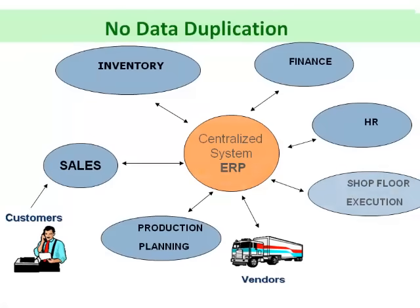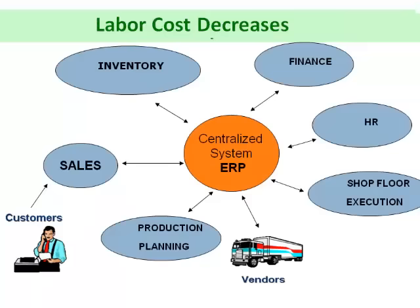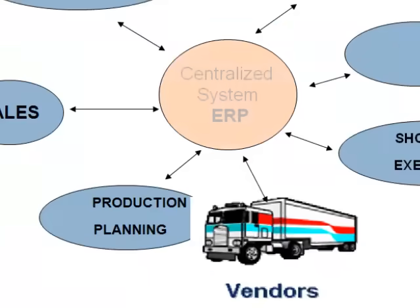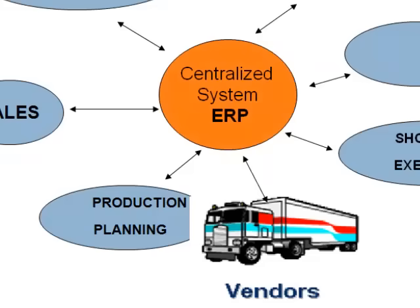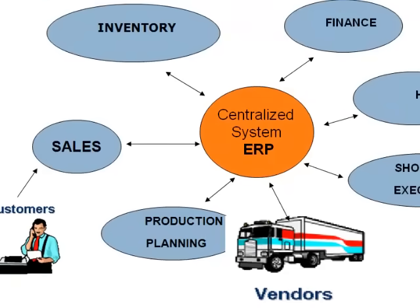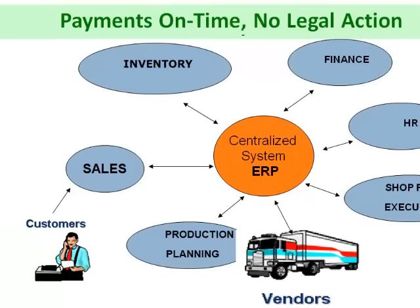The shop floor team updates their manpower status regularly in the central database, which can be accessed by the HR department. In case of a workforce shortage, the HR team starts the recruitment process with considerable lead time to hire a suitable candidate at market price, thus bringing labor costs down. Vendors can directly submit their invoices to the centralized enterprise system, which can be accessed by the finance department, ensuring payments are made on time and possible legal actions are avoided.